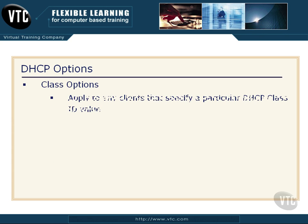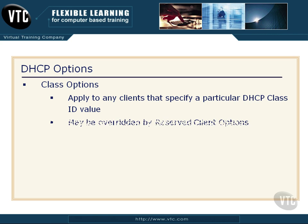These class options — keep in mind that we can tag our clients with a class value or class ID. Then on our DHCP server side, we can set options based on that particular class, so we can cross over between scopes and classes and make sure that certain clients get certain options. Class is just another way to designate how different clients get different settings.